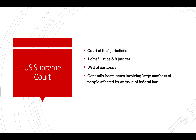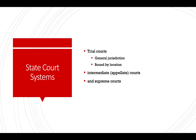The U.S. Supreme Court is the court of final jurisdiction. It has one chief justice and eight associate justices. You only get to be heard by the Supreme Court if they issue a writ of certiorari, and they generally hear cases involving large numbers of people affected by an issue of federal law. Moving to the state court system — all states are different, but they generally have the same three levels the federal government has: trial courts, intermediate courts, and supreme courts. Trial courts have general jurisdiction and are bound by location.